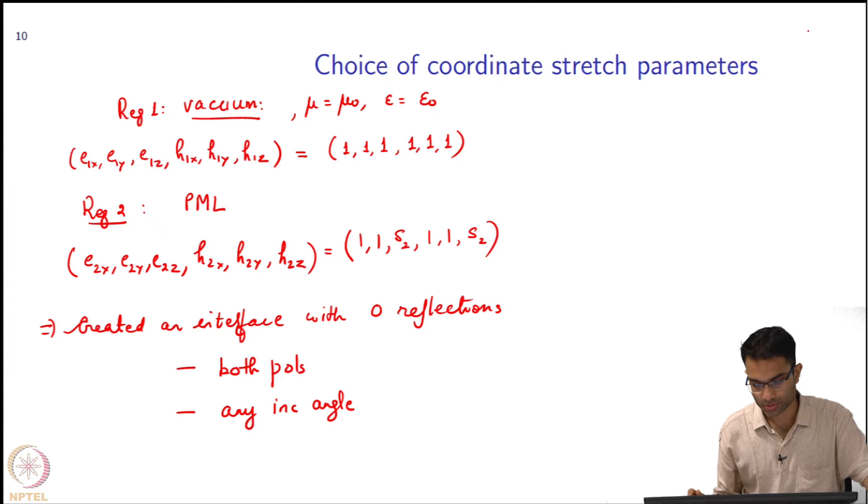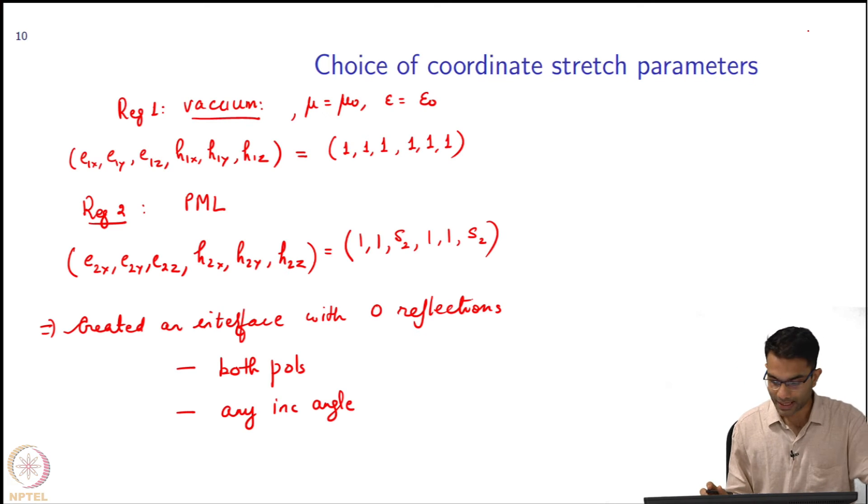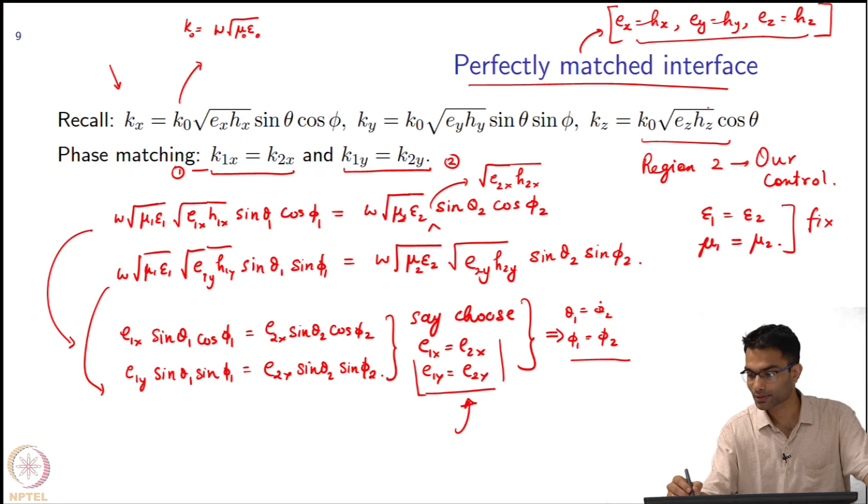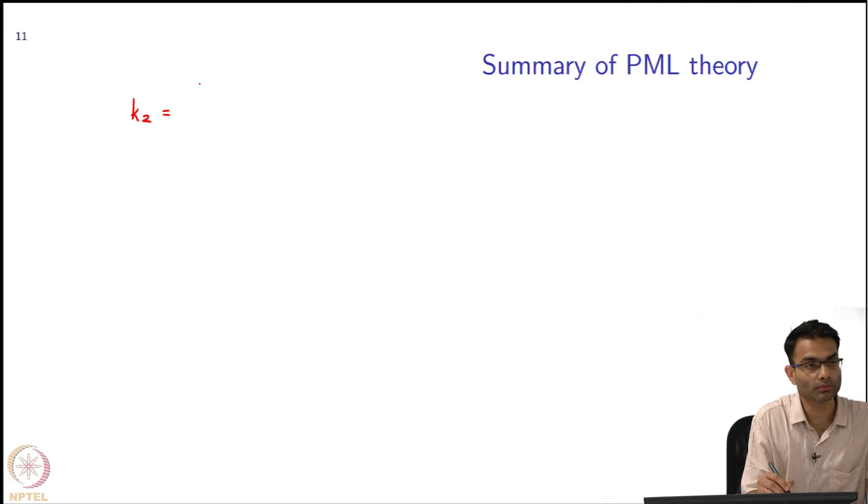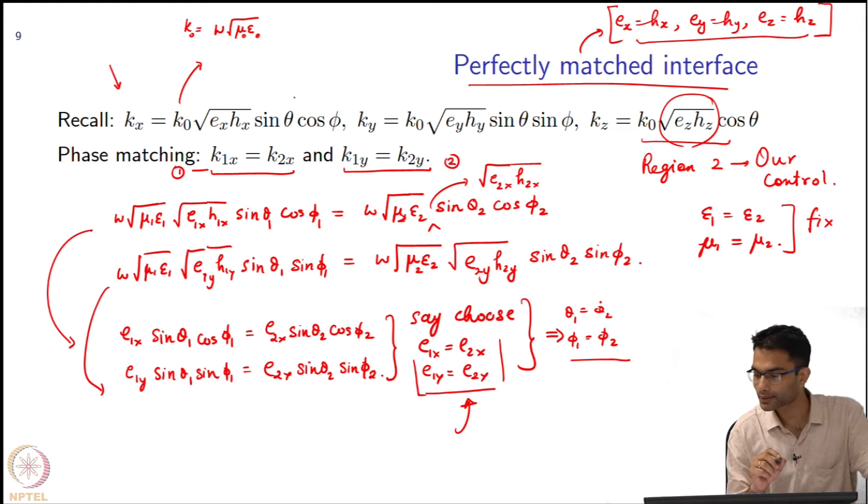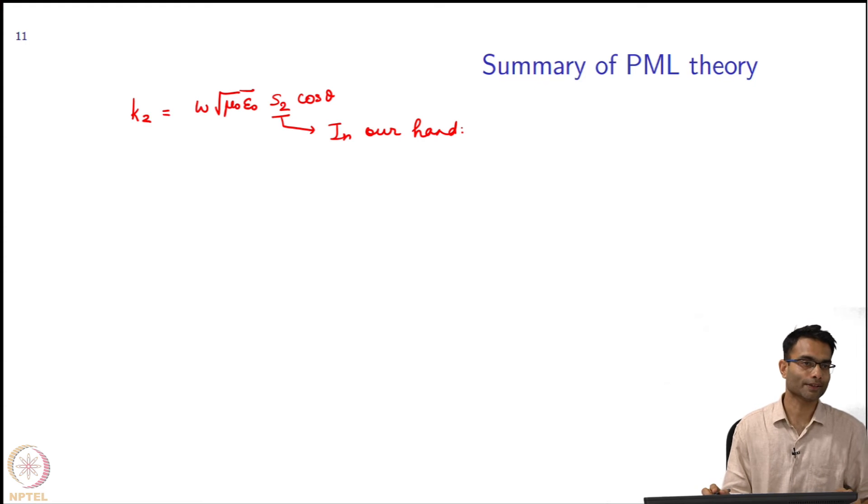This is what we do. Now so far I have not told you anything about what this s2 should be. That is actually something that is in our hands. Let us sort of summarize this PML theory over here. This s2 parameter, where does it appear? It is this guy. When I write down over here, kz was equal to omega square root mu naught epsilon naught because I am matching it to vacuum, and then I had s2 cos theta. That is what my wave was. This is in our hand.